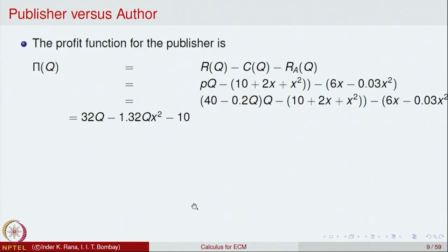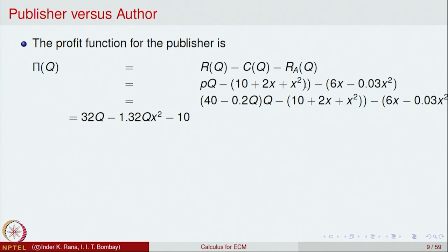From the publisher's perspective, profit = R(Q) − C(Q) − author's royalty. R(Q) = P·Q, C(Q) = 10 + 2Q + Q², and the author's royalty is 6Q − 0.03Q². Substituting and simplifying gives the publisher's profit function π(Q) = 32Q − 1.32Q² (treating X as Q throughout).